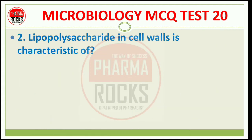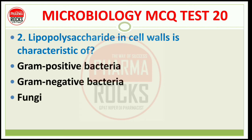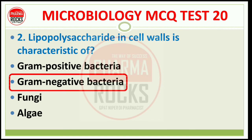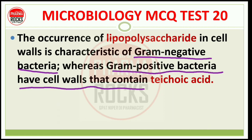Question number 2: Lipopolysaccharide in cell wall is a characteristic of gram-positive bacteria, gram-negative bacteria, fungi, or algae? The correct answer is option number B, gram-negative bacteria. The occurrence of lipopolysaccharide in cell wall is the characteristic of gram-negative bacteria, while gram-positive bacteria have a cell wall that contains teichoic acid.